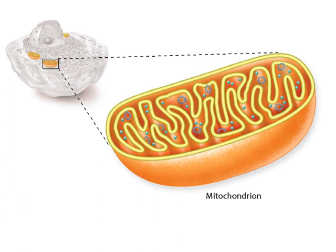Cellular respiration occurs in organelles called mitochondria. The mitochondrial electron transport chain is a key component in cellular respiration. The objective of this tutorial is to help you understand the steps of the electron transport chain.